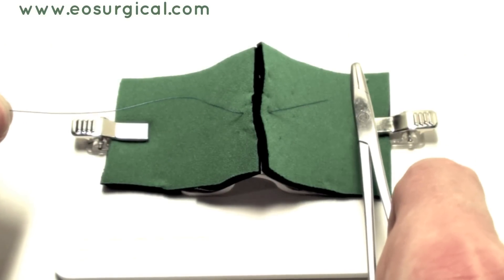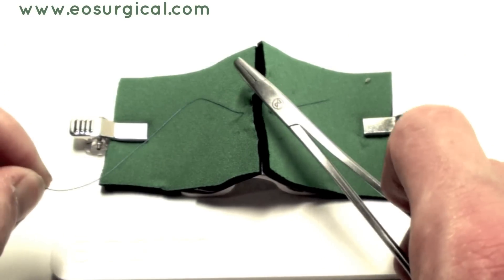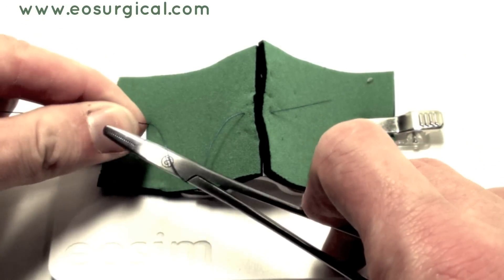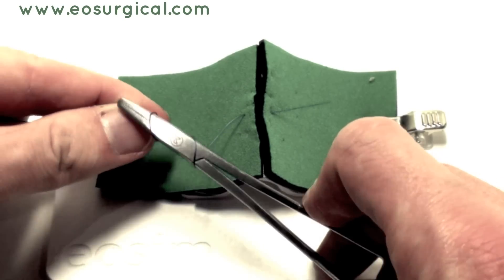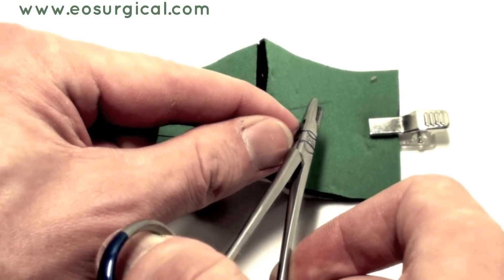Pull your suture through. There's only a small amount of tail left at the end before performing the instrument tie. To do this, you need to bring your instrument from the short end towards the long end, then wrap it around twice.